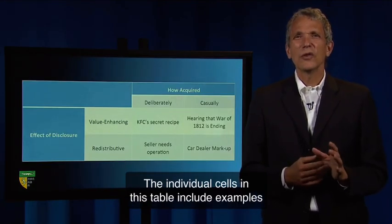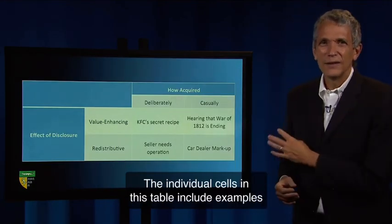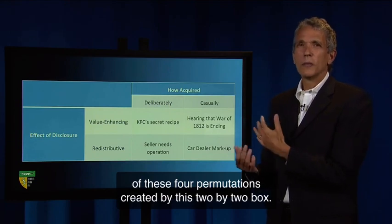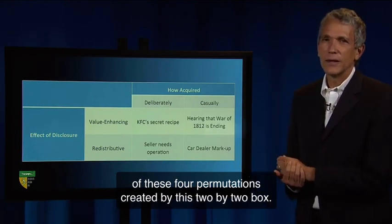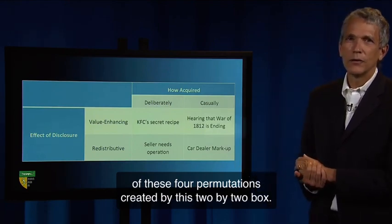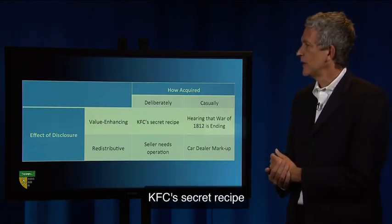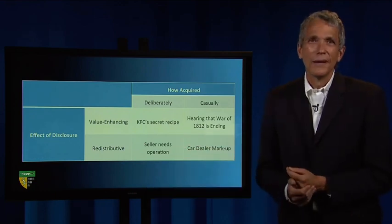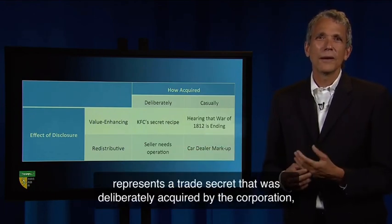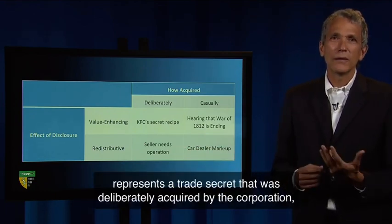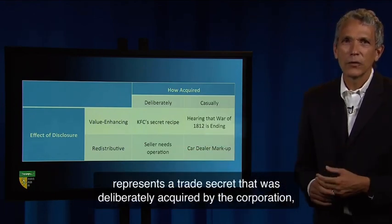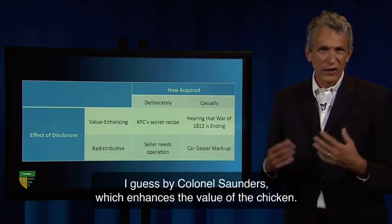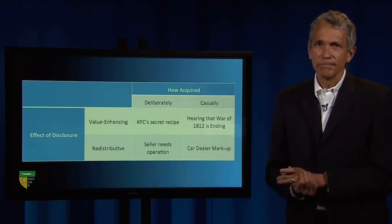The individual cells in this table include examples of these four permutations created by this 2x2 box. KFC's secret recipe represents a trade secret that was deliberately acquired by the corporation — I guess by Colonel Sanders — which enhances the value of the chicken.